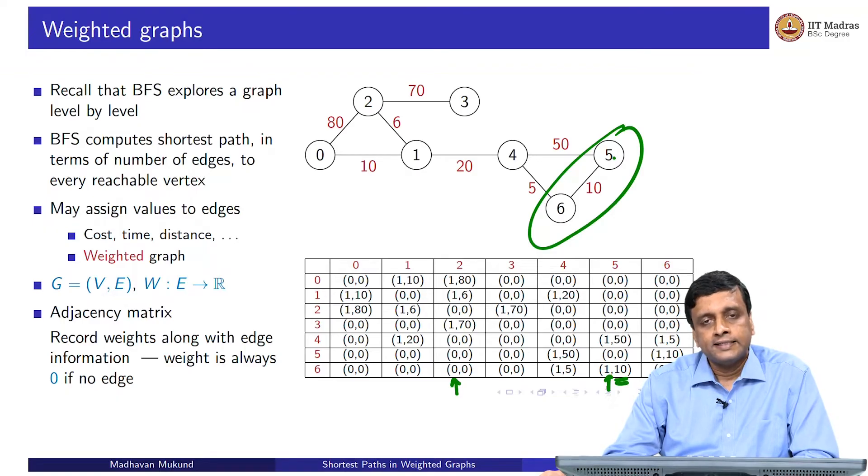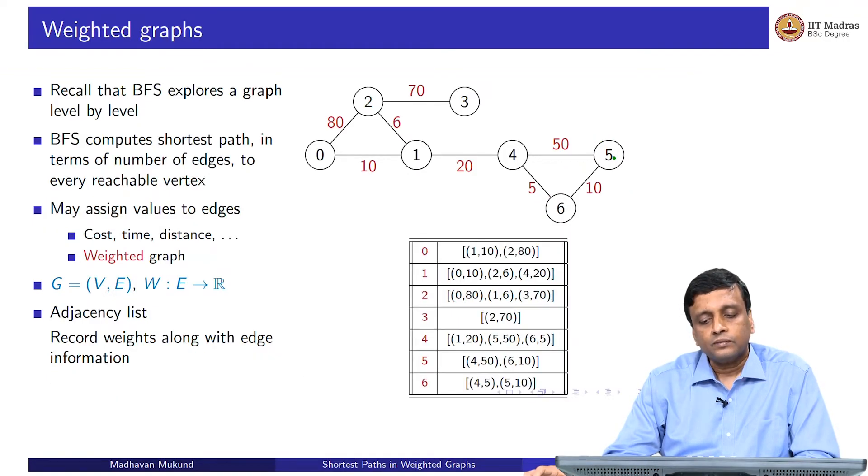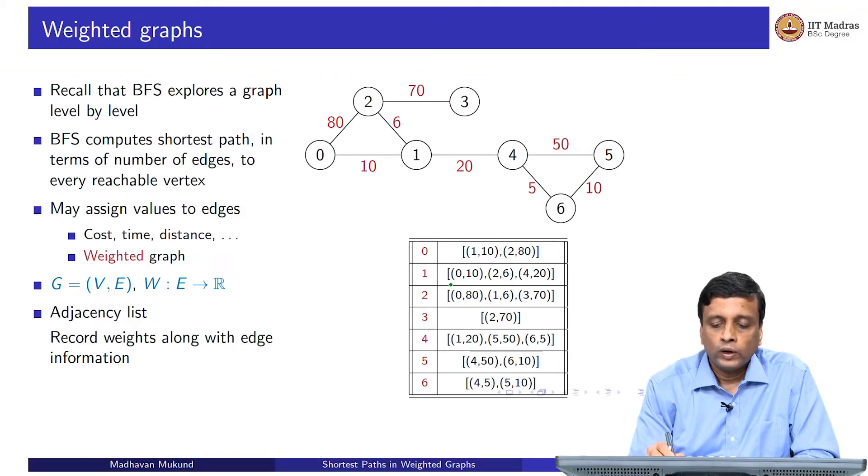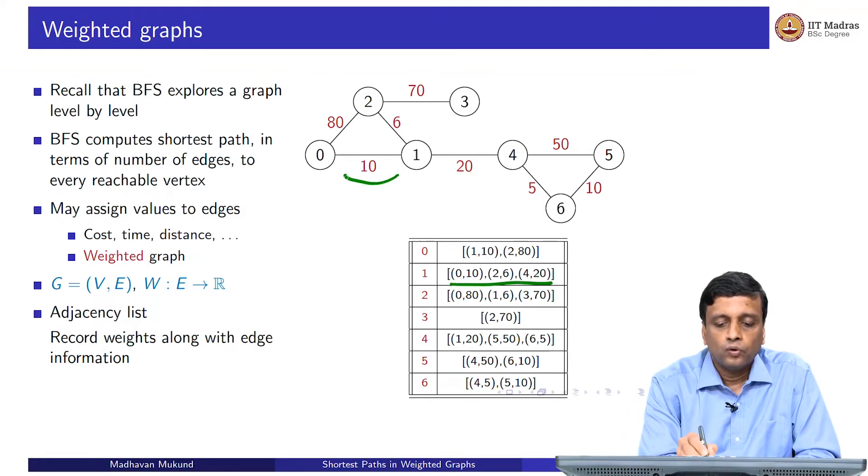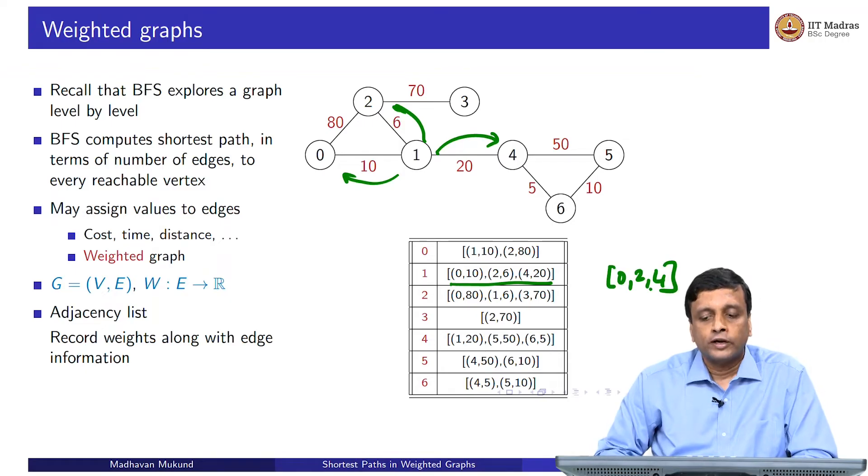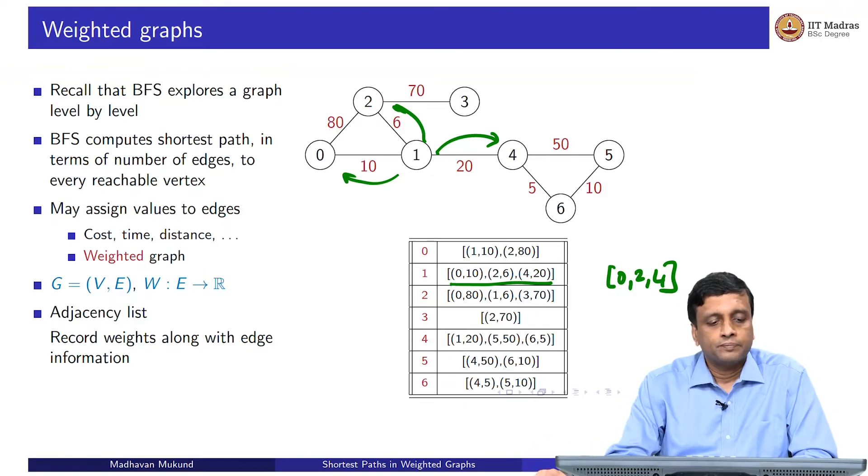If I want to have it in an adjacency list, then with each vertex, I will keep track of not just the outgoing vertices it is connected to, but the weight of each of these edges. This says that for instance, 1 is connected to 0 with weight 10, it is connected to 2 with weight 6 and is connected to 4 with weight 20. The normal adjacency list would just have been 0, 2, 4. Instead of just 0, 2, 4, I keep 0 comma 10, 2 comma 6, 4 comma 20 to keep track of the weights. This is how we represent a weighted graph.